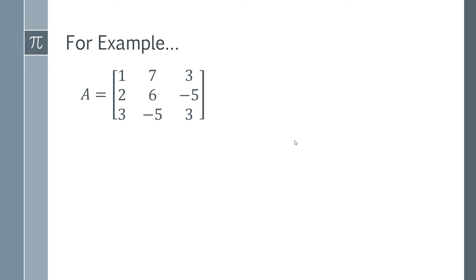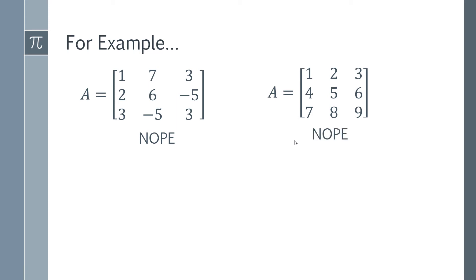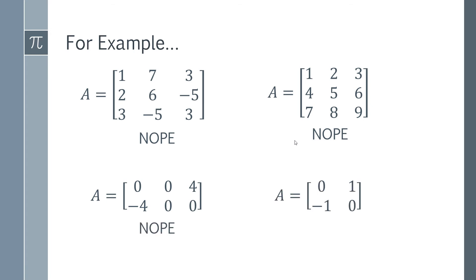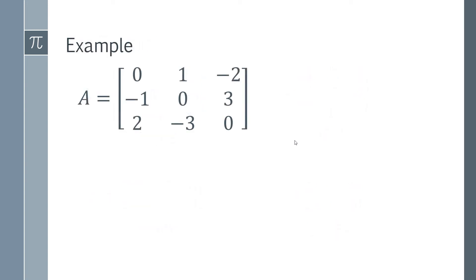Let's look at some simple examples. The first one is immediately not skew symmetric — the leading diagonals are not all zero. In the second case, similarly, the leading diagonals are wrong so it can't be skew symmetric. The third one looks better but it's a non-square matrix so it's not going to be skew symmetric. The fourth one has leading diagonals that are zero and is a square matrix, so this one actually has a chance and you'd have to do the full check.